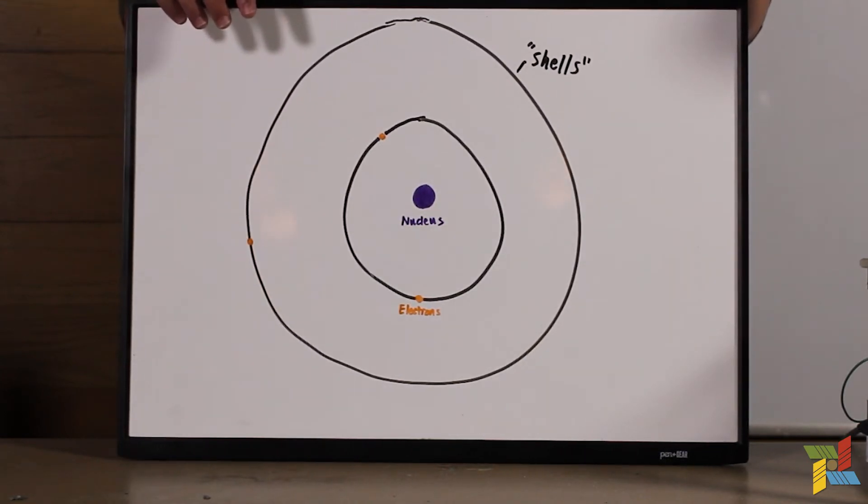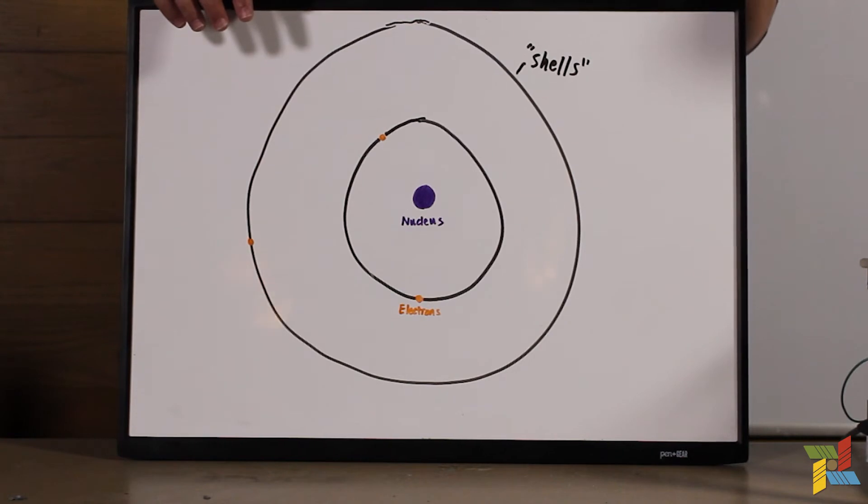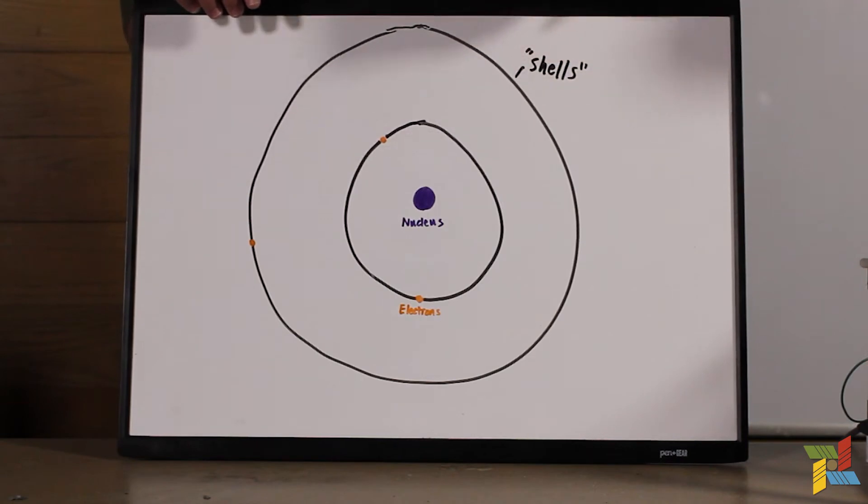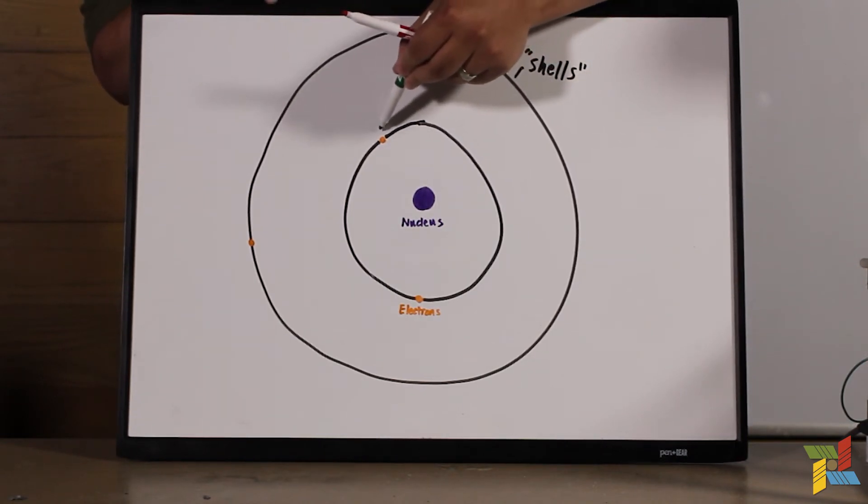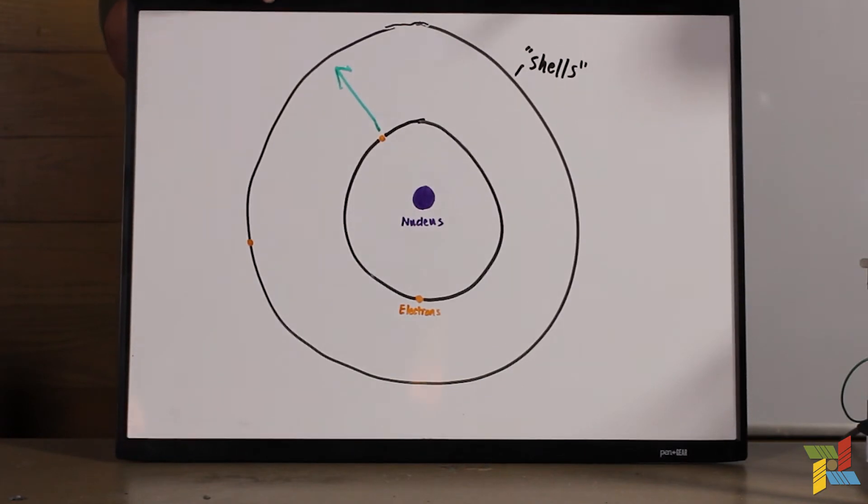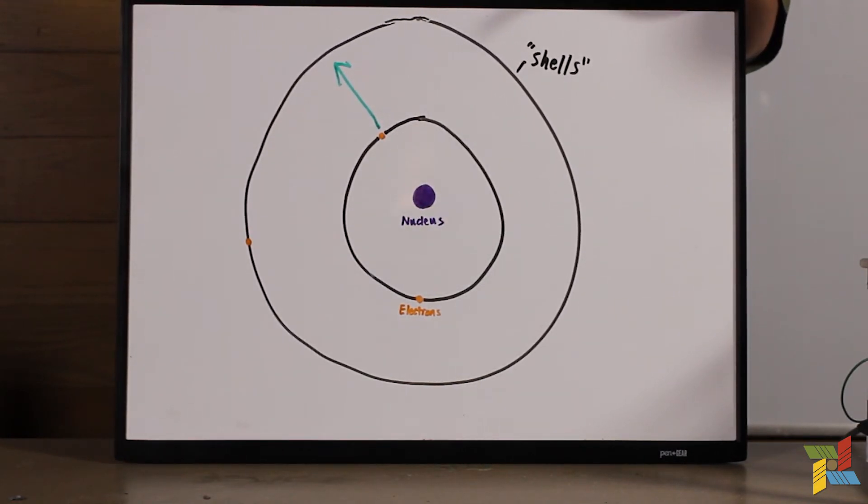What happens when you put a tube of argon into an electric field like the Tesla coil is you end up making these inner electrons jump up in energy. So now they have more energy. But that's not what actually causes the light.